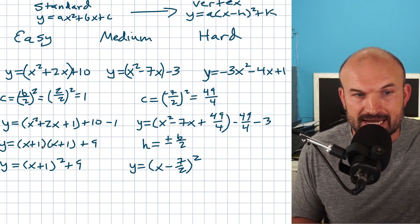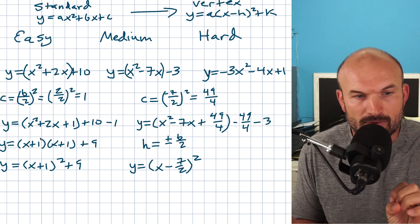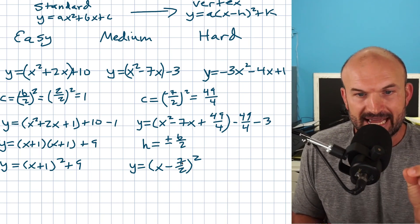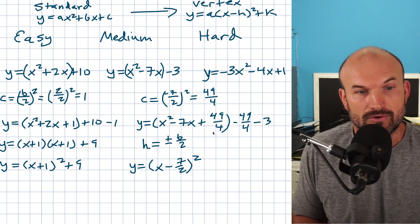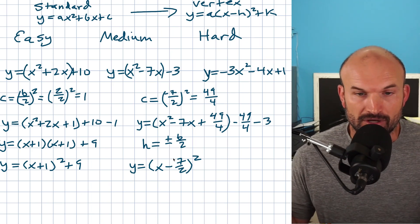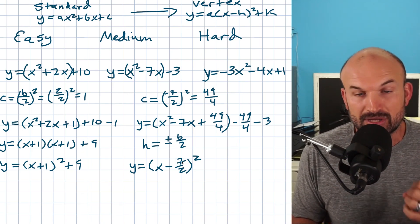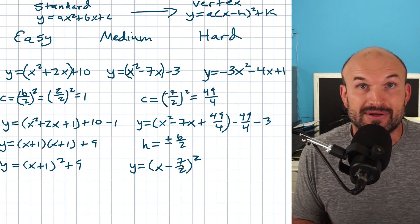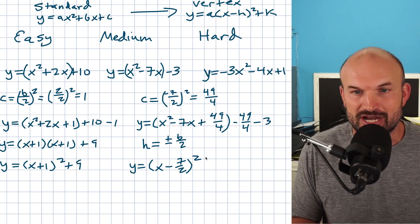Let's make sure this works. Just like x plus one quantity squared is x plus one times x plus one, you multiply those last two terms: negative seven halves times negative seven halves gives positive 49 over four. And adding the inner and outer middle terms — negative seven halves plus negative seven halves — gives negative 14 halves, which is negative seven. It checks out.